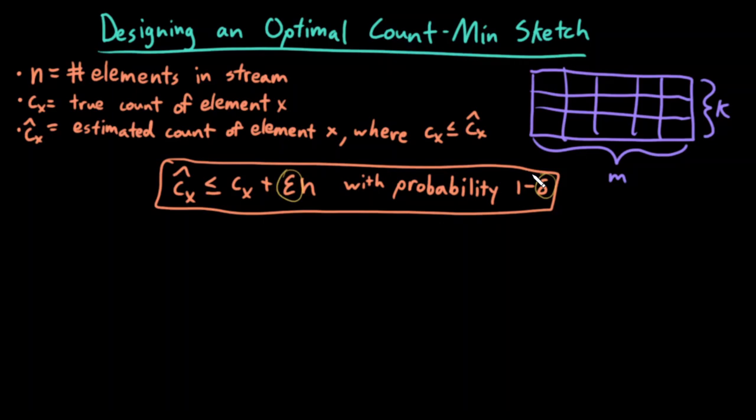I'm going to list some equations that I'm just going to produce here. I'm not going to derive them because they're non-trivial. If you're interested in how these equations are derived, I would suggest reading the original count-min sketch paper. But basically, the process is as follows: if I want to design my own count-min sketch, so I want to pick optimal k and m, first I have to guess the value of n.